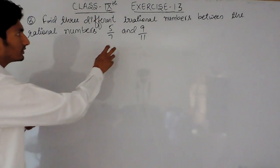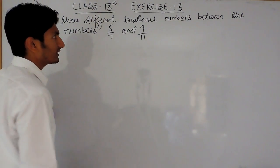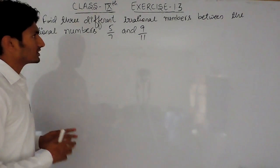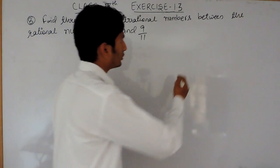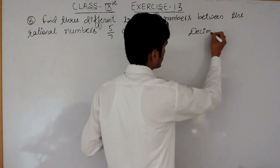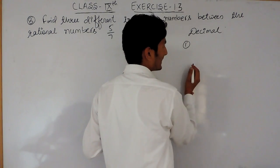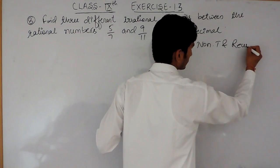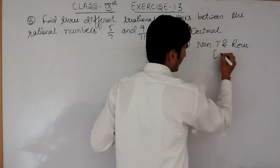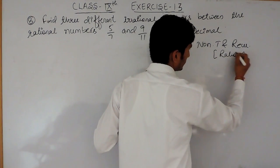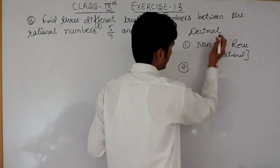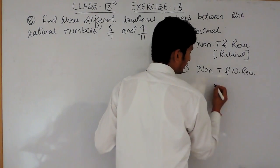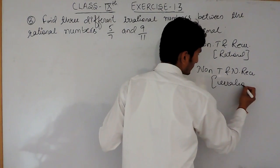Now there is another definition for rational and irrational numbers when we talk about decimals and decimal expansions. When the decimal expansion is non-terminating and recurring, that is known as a rational number. But if the decimal expansion is non-terminating and non-recurring, in that case that number is known as an irrational number.